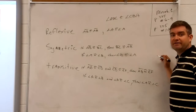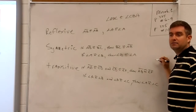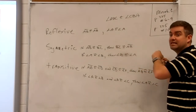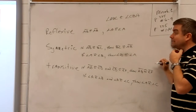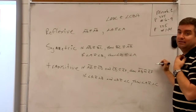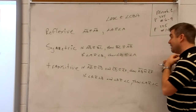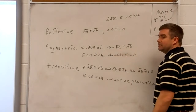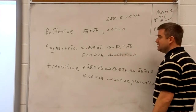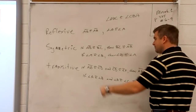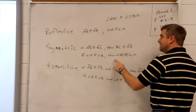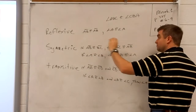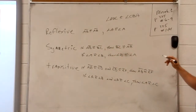Now let's look at the symmetric property. What's different about symmetric is how it's written — it's a conditional statement, an if-then. If AB is congruent to BC, then BC is congruent to AB. They flip-flop around the congruent symbol. Same thing with angles: if angle A is congruent to angle B, then angle B is congruent to angle A. This is the symmetric property of congruence for segments and angles.